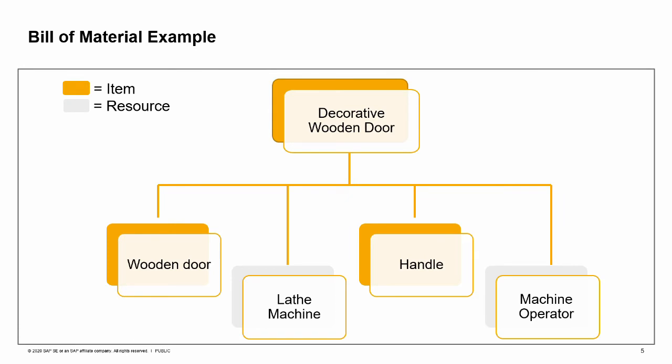Let us try to understand the bill of materials concept by using the following example. To manufacture an engraved wooden door, we need two items: a plain wooden door and a handle. In addition, we need to engrave a decoration pattern. To do this, we need two resources: a lathe machine and a machine operator employee. These items and resources combine the decorative wooden door bill of materials.